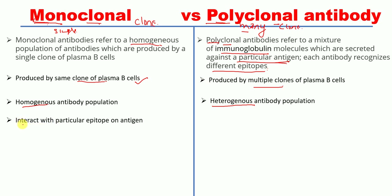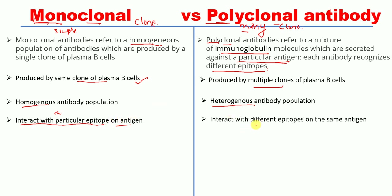The next difference: monoclonal antibodies interact with a particular epitope on an antigen, whereas polyclonal antibodies interact with different epitopes on the same antigen, because they are a mixture of many antibody types.